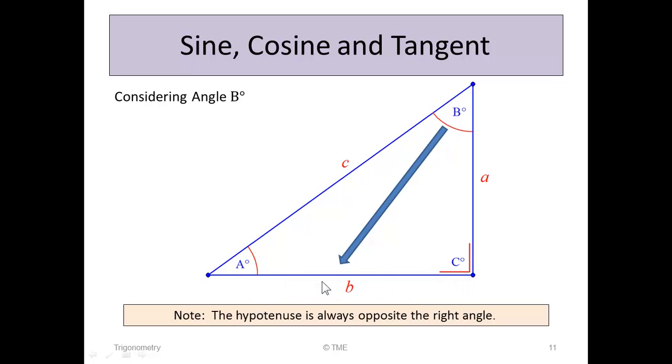B is the only side that doesn't touch angle B. Side A is adjacent to it, and C also touches it. So the side that's opposite angle B is side B.